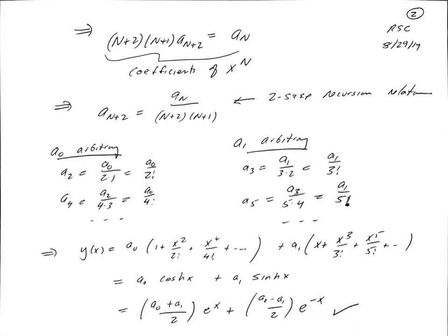If we plug that back into our series, we see that y(x) can be written as a₀ times a sum, 1 plus x squared over 2 factorial plus x to the fourth over 4 factorial, etc. This is very much like the Taylor series for the cosine, except that the signs don't alternate. In fact, it's the Taylor series for the hyperbolic cosine of x, cosh x.